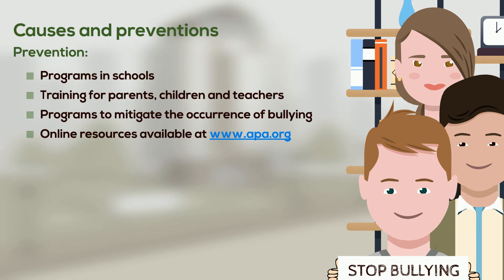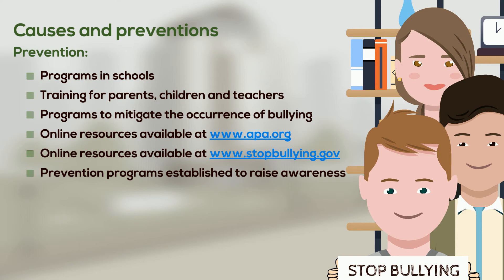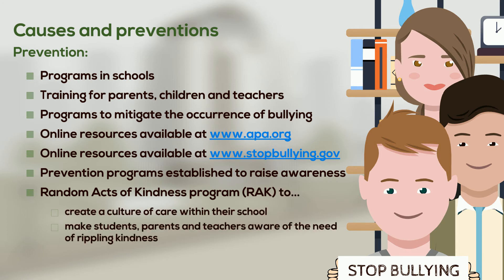Apart from online resources available at www.apa.org and the Department of Health and Human Service government website in the United States, www.stopbullying.gov, which publish articles, books and guides for both parents and teachers, there are also prevention programs established to raise awareness and curb bullying. For instance, the Mountain Academy of Evergreen in the U.S. has implemented a program, Random Acts of Kindness, also known as RAC, to create a culture of care within the school and to make students, parents and teachers aware of the need of rippling kindness and values within the school and its community.